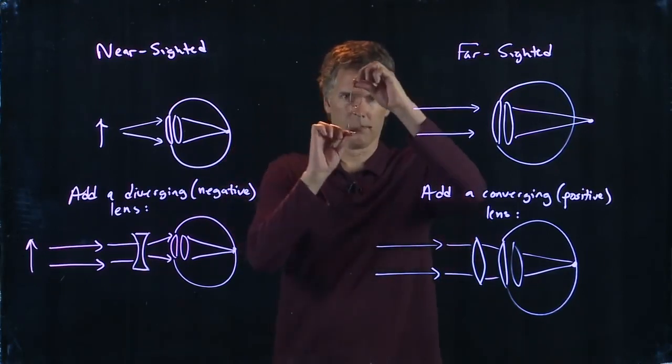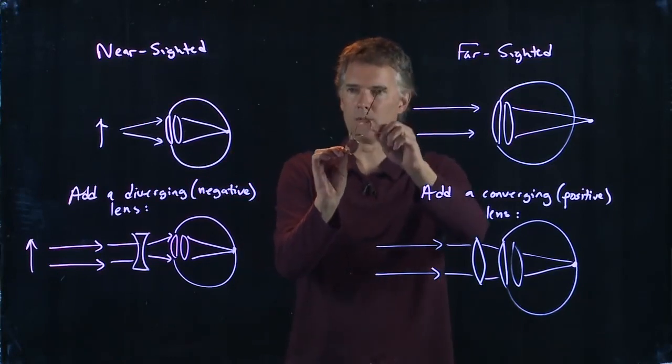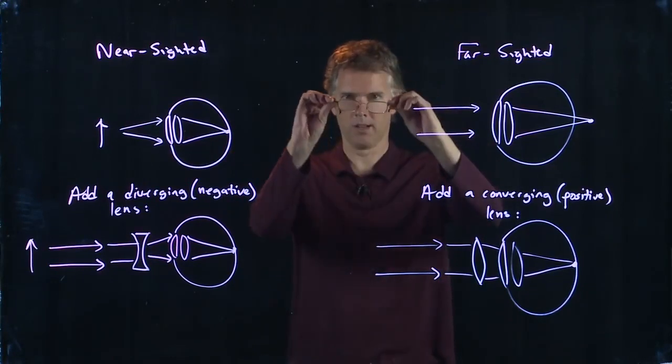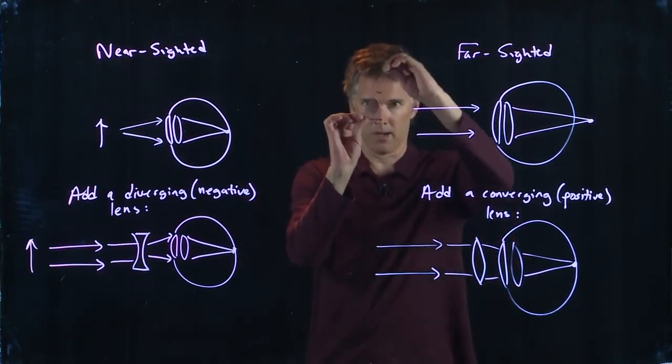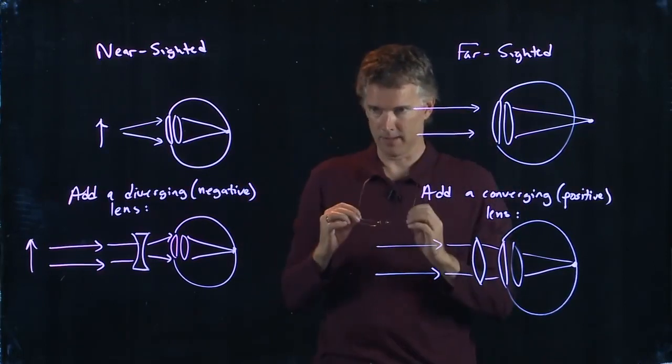So when I rotate this, the image in the right one doesn't get as distorted as the one in the left one. And when I look out at you guys, you become very distorted in that left lens.